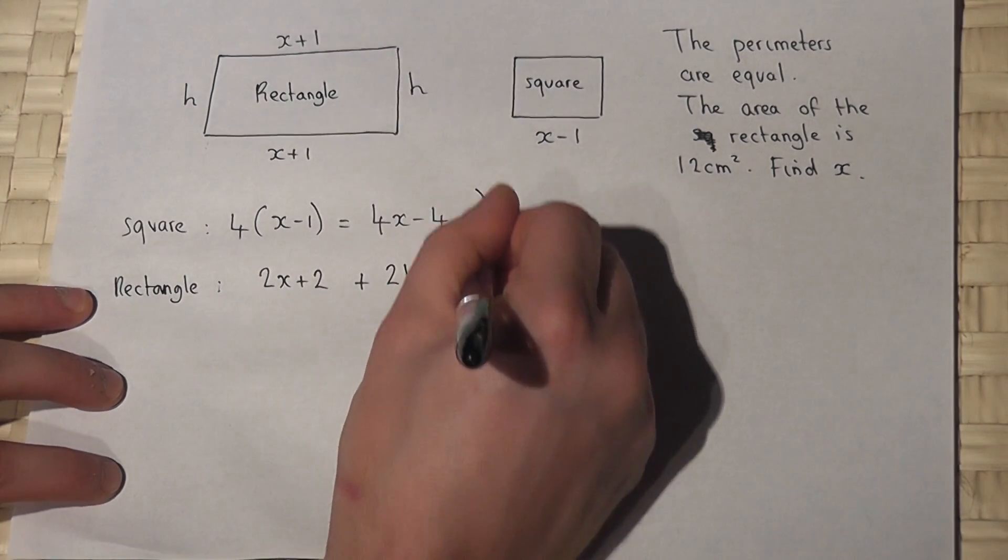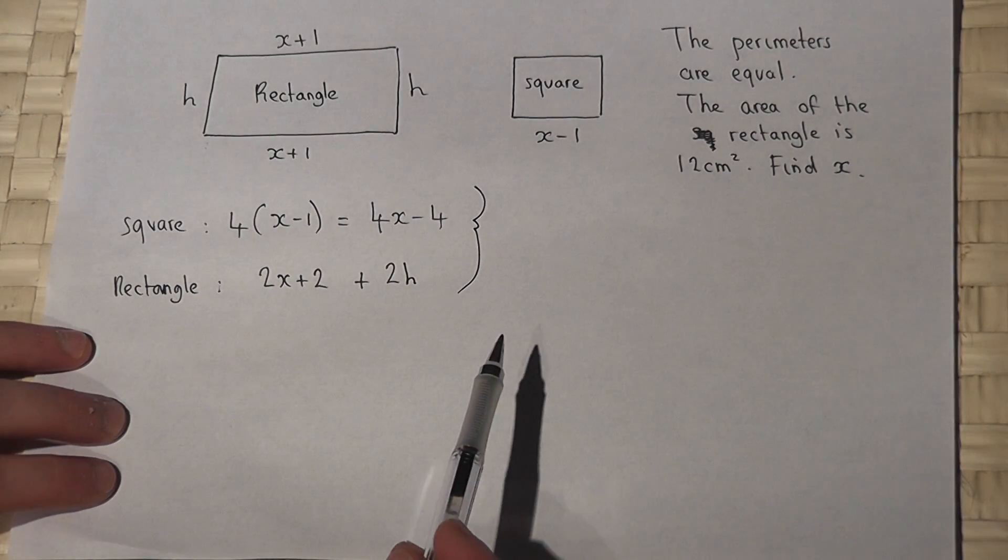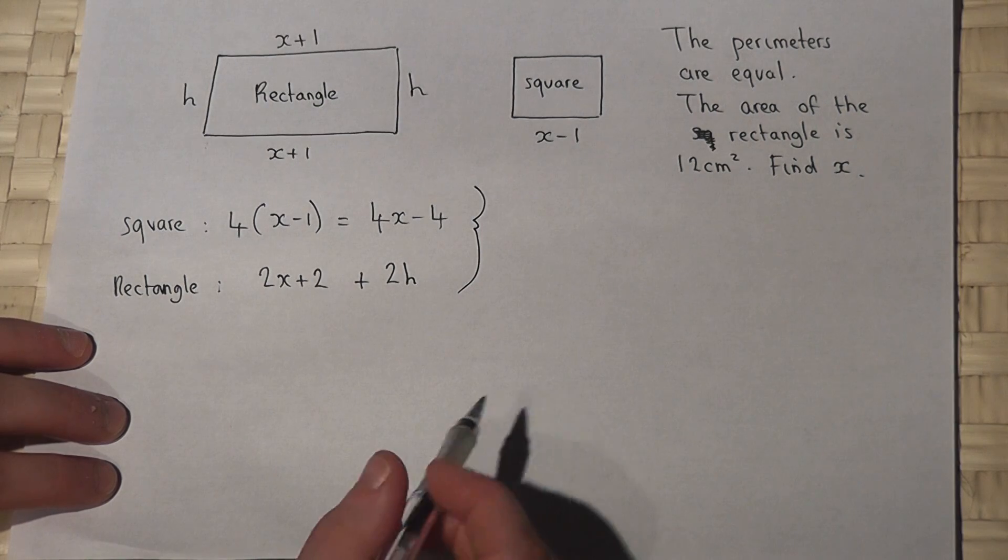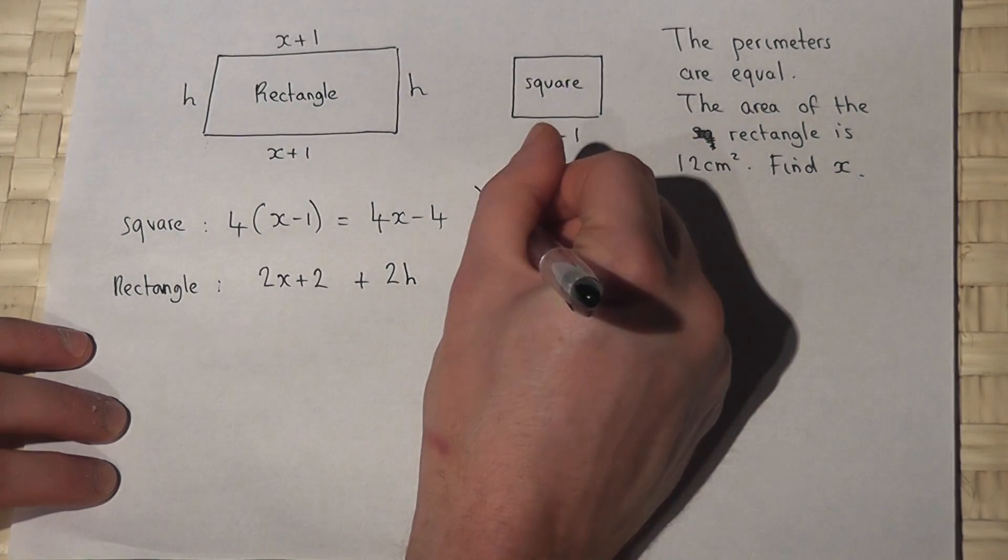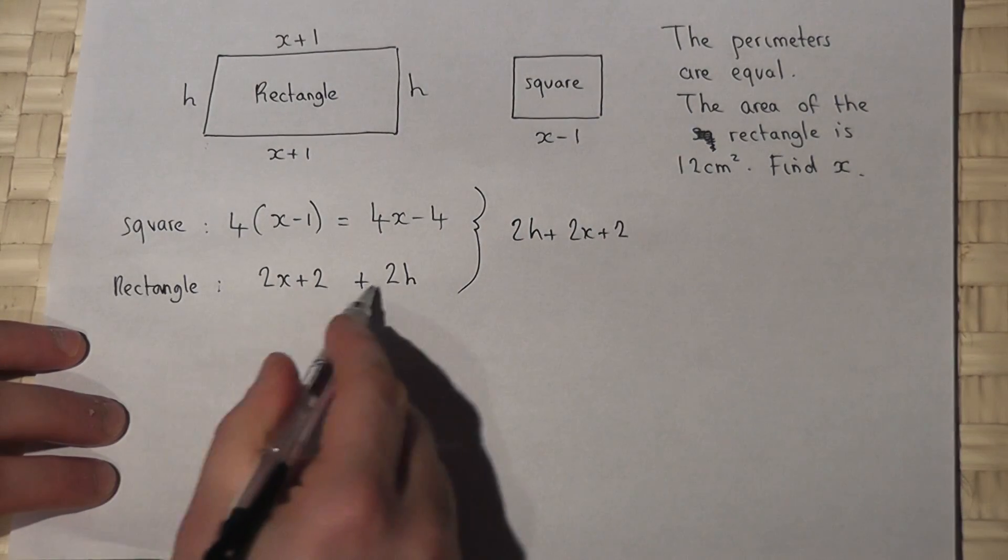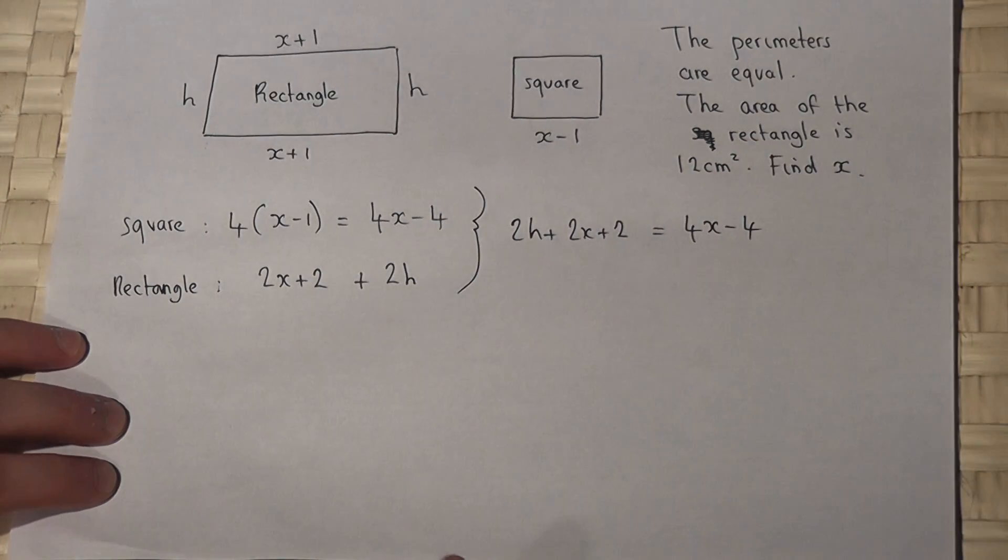Now then we're told that the perimeters are equal, so I can find the height of the rectangle in terms of x because if we look at this, 2h plus 2x plus 2, that's the perimeter of the rectangle, must equal 4x minus 4. So I can find h in terms of x.